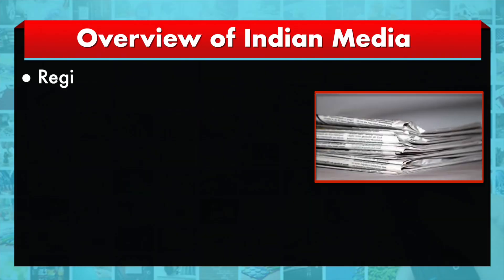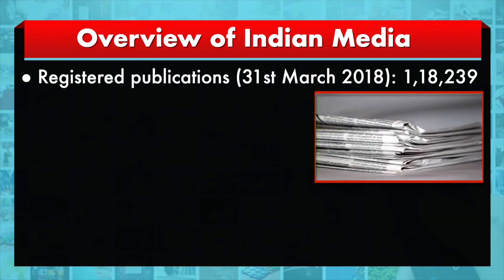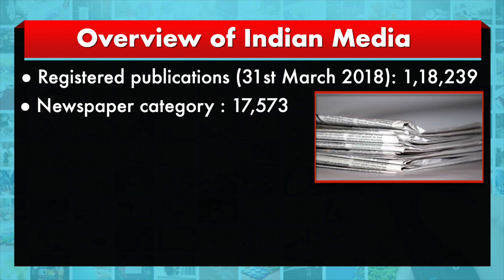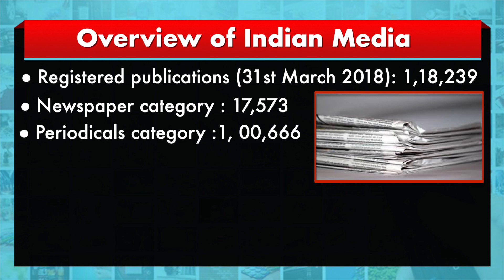As of today, the registered publications in India number 11,18,239. This data is retrieved from the Registrar of Newspapers in India, under which the newspaper category has around 17,573 publications, and the periodical category has 1,666 publications.